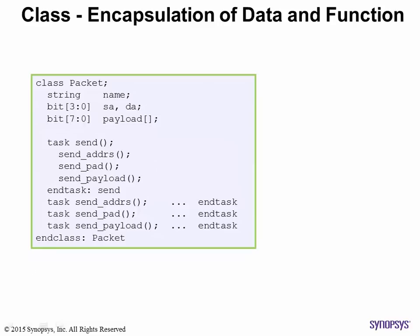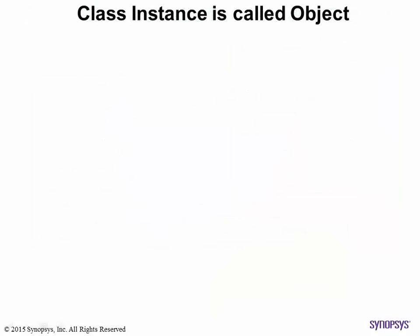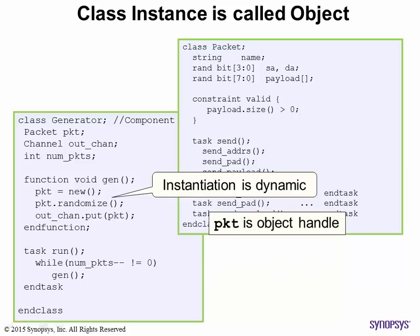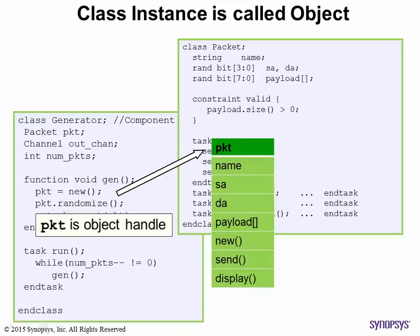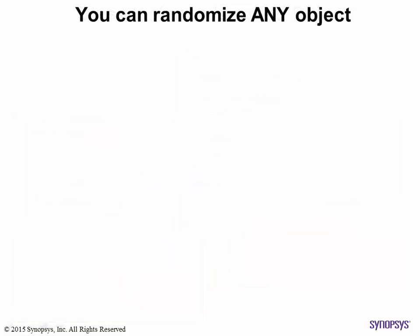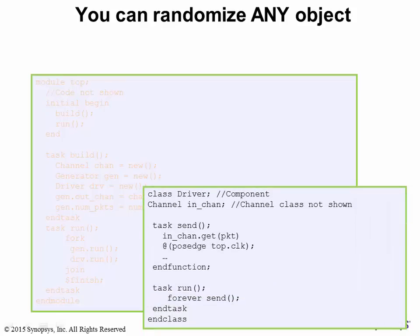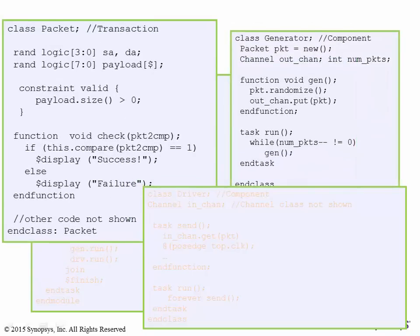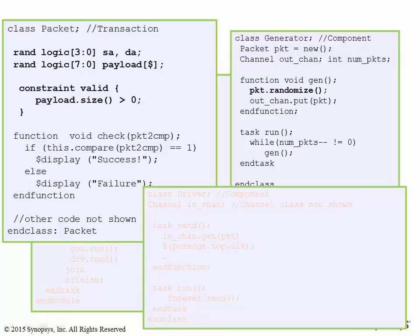We saw in earlier episodes that a class is an encapsulation of data and function, just like a module. We also saw that an instance of a class is called an object. The new function constructs the memory of the object based on the class definition. We saw in the episode on randomization that you can define transaction and component classes to architect your test bench. The power of randomization comes from the randomize function, which is built into each class. You can control randomization using constraints.